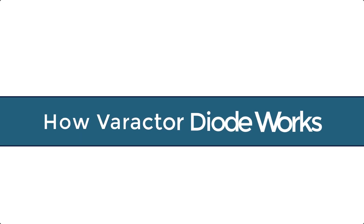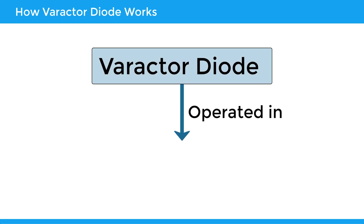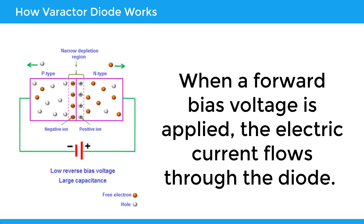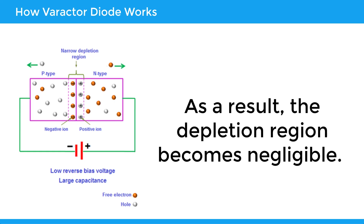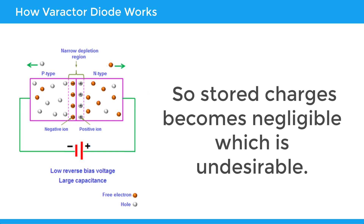Let's look into how the varactor diode works. It should always be operated in reverse bias because in reverse bias, the electric current does not flow. When a forward bias voltage is applied, the electric current flows through the diode. As a result, the depletion region becomes negligible. We know the depletion region consists of stored charges, so stored charges become negligible, which is undesirable.